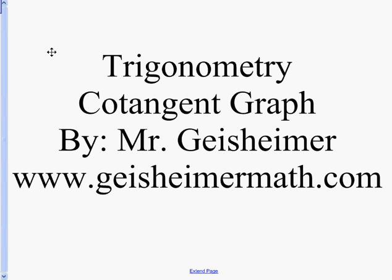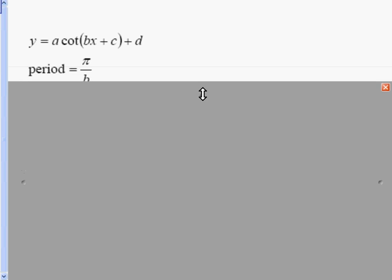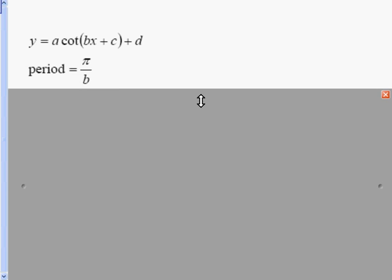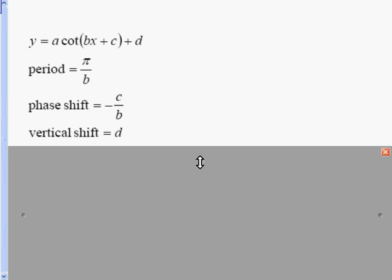Let's look at graphing the cotangent curve, very similar to graphing a tangent curve. The formula is y equals a cotangent of bx plus c, then plus d on the outside. The period is pi over b, the phase shift is negative c over b — opposite of the inside divided by b — and the outside number d tells us the vertical shift.